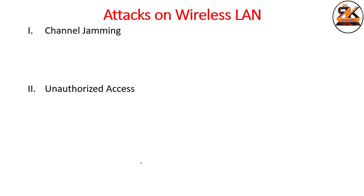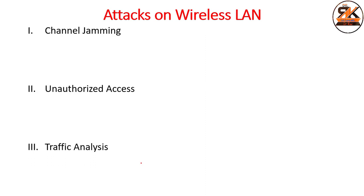Another attack is unauthorized access, where the attacker gains access to the internal network using the access point, bypassing the firewall. Firewalls are usually installed on gateways, and if authentication is not turned on — which is a default feature — the attacker can easily connect to the access point. A third type is traffic analysis, where the attacker analyzes overheard wireless traffic to obtain useful information such as network usage patterns, then performs cryptanalysis to generate ciphertext and plaintext pairs.